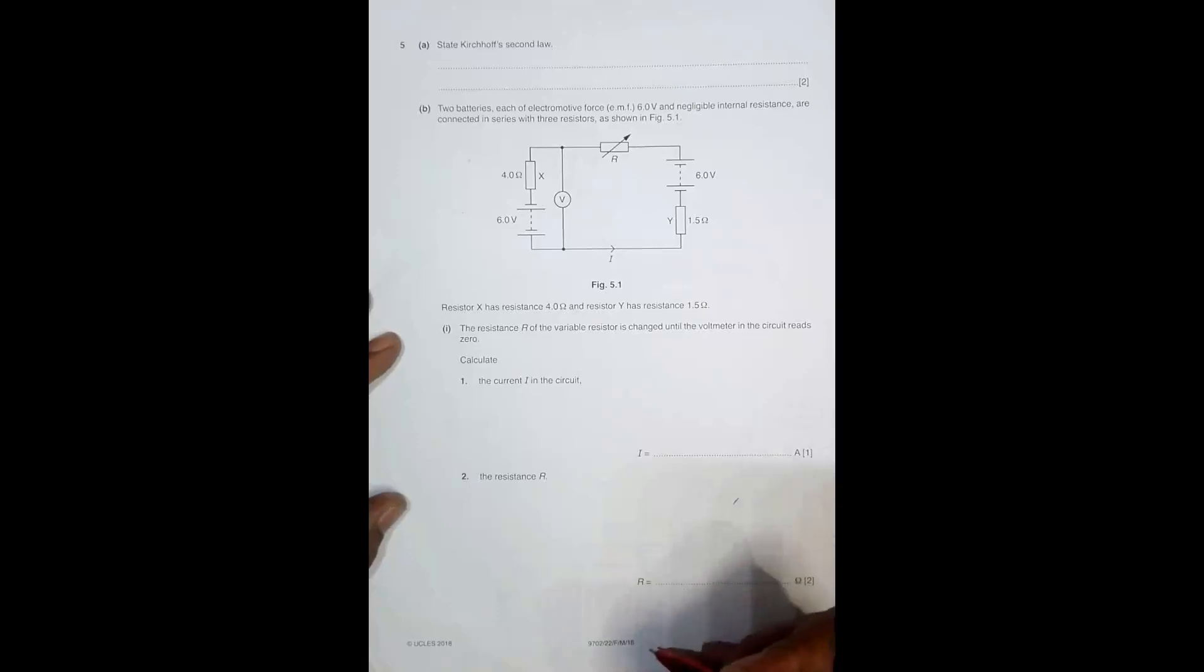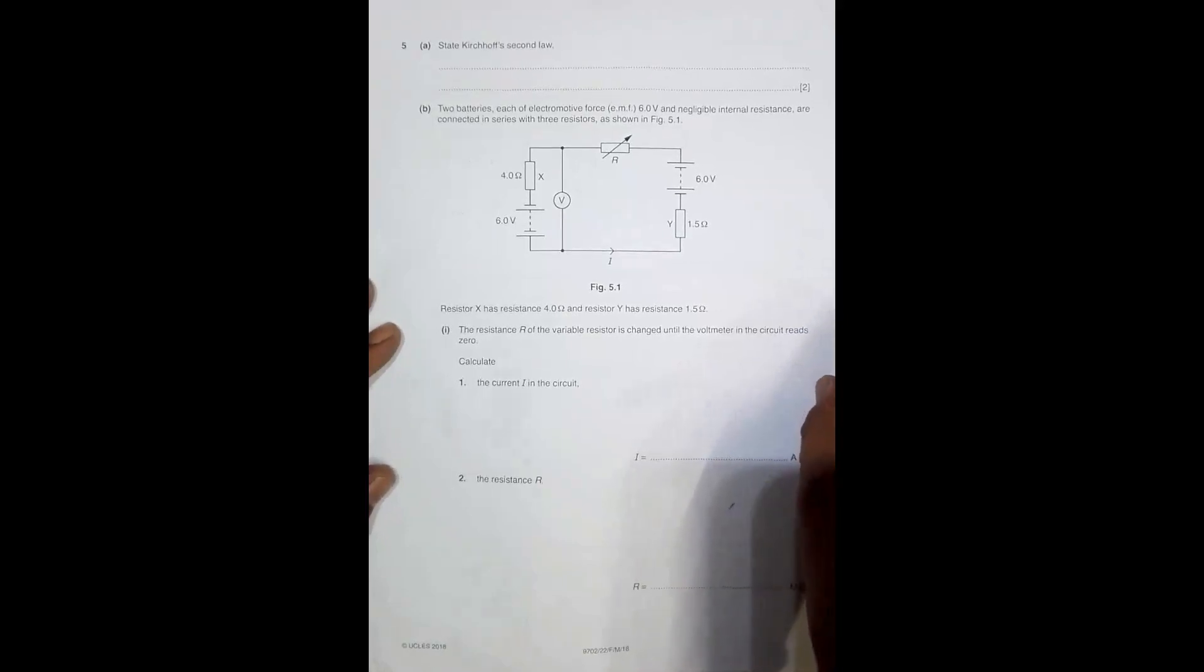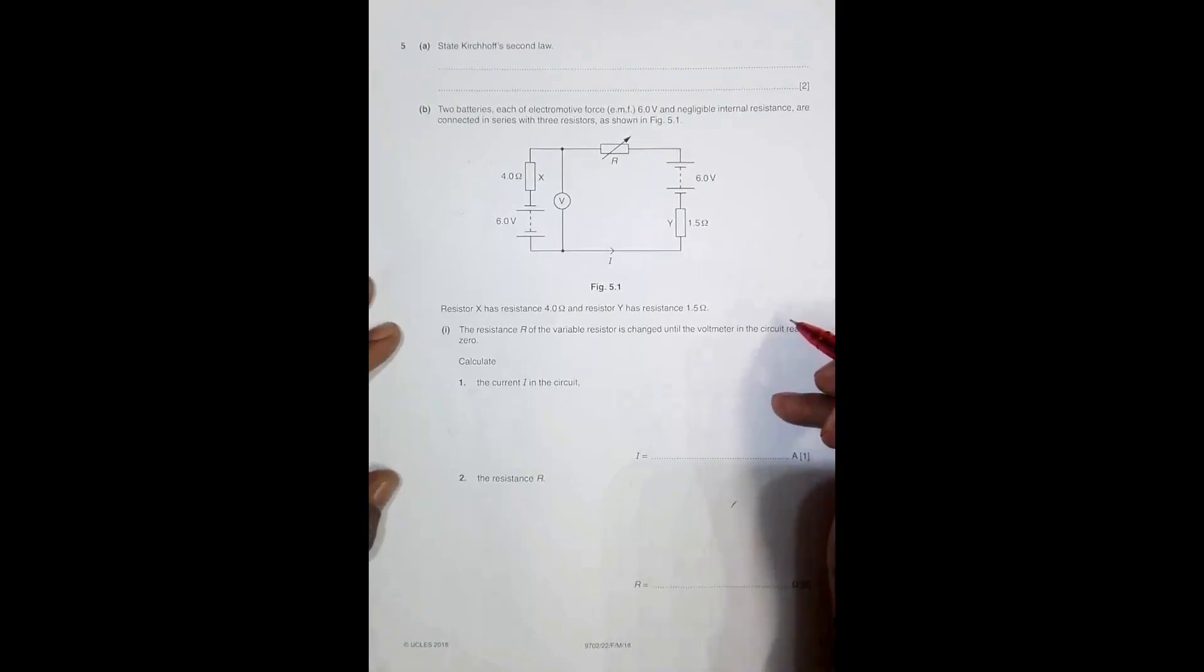Hello folks, this is the question from 2018 February/March paper 22, question number 5. The first part asks us to state Kirchhoff's second law. This is not my focus here, but the simple statement would be: in a closed circuit or loop, the sum of EMF and the sum of potential differences should be equal.